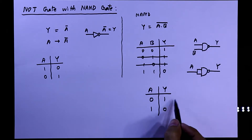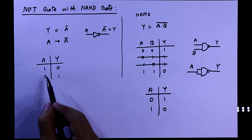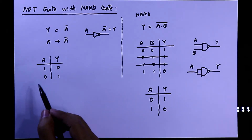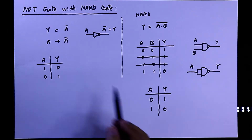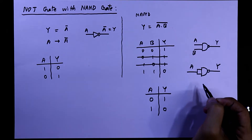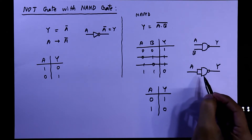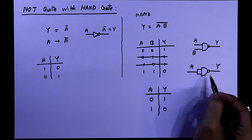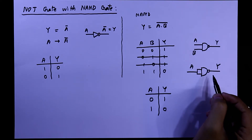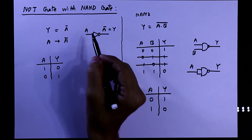So this is the truth table of NOT gate. This is how we can get a NOT gate using a NAND gate. If we short both the inputs of a NAND gate, we will get a NOT gate.